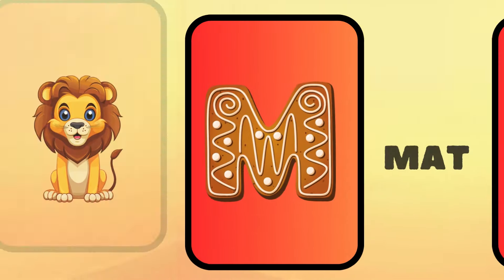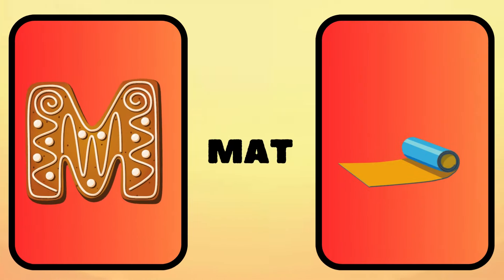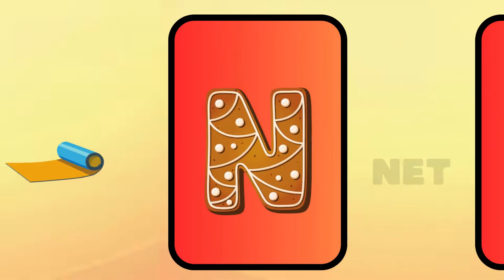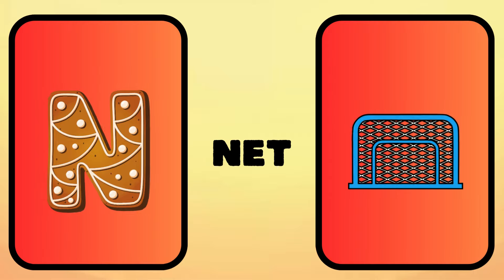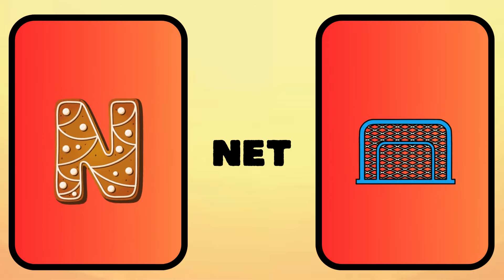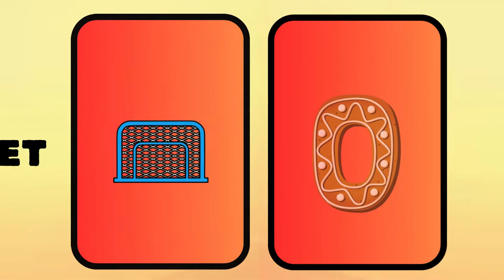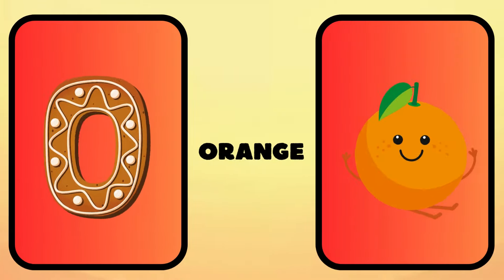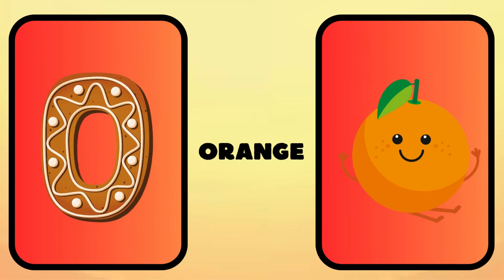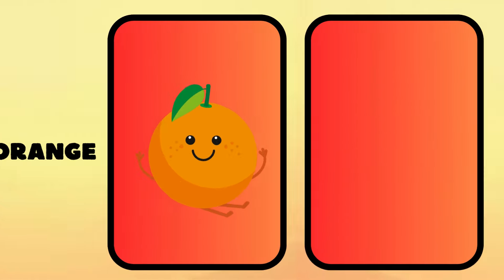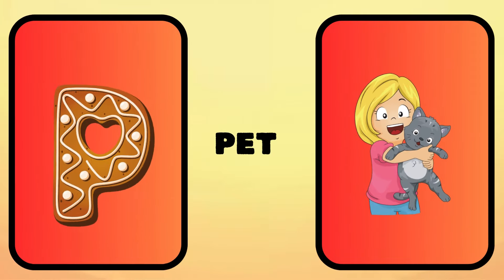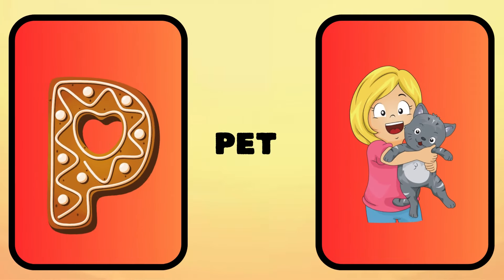M is for mat, m-m-mat. N is for net, n-n-net. O is for orange, o-o-orange. P is for pet, p-p-pet.